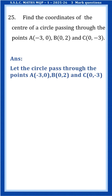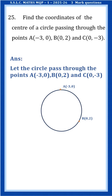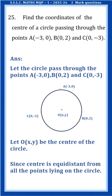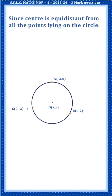Let the circle pass through the points A(-3, 0), B(0, 2), and C(0, -3). Let O(x, y) be the center of the circle. Since the center is equidistant from all the points lying on the circle, OA = OB = OC.